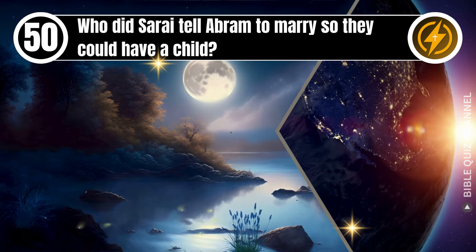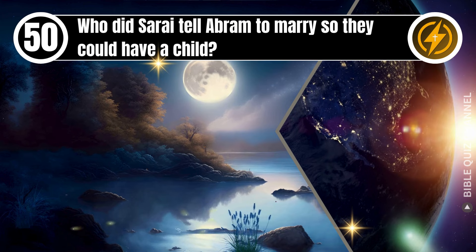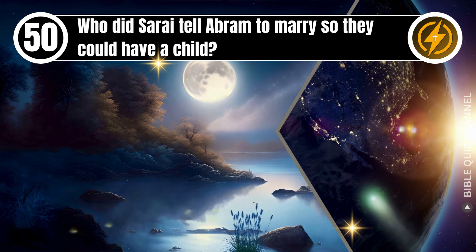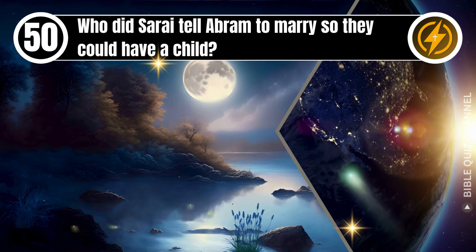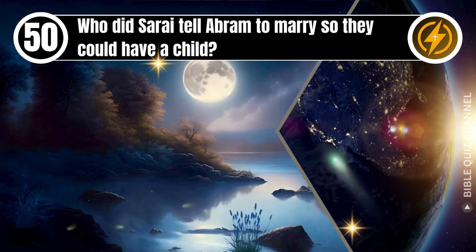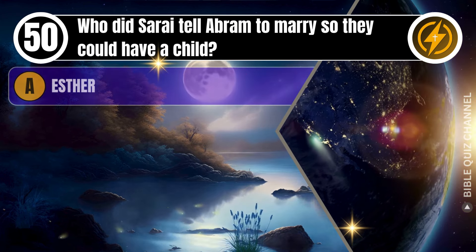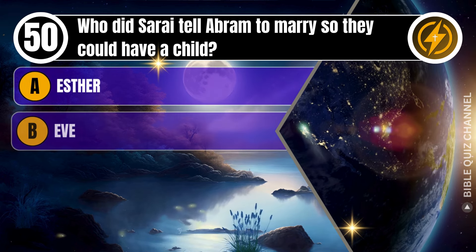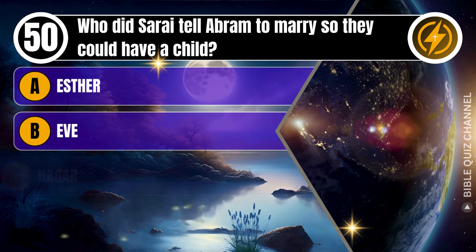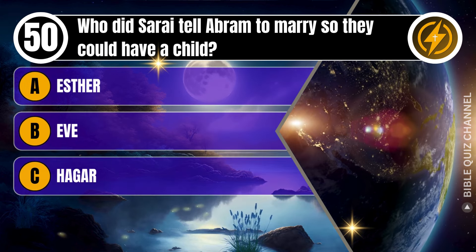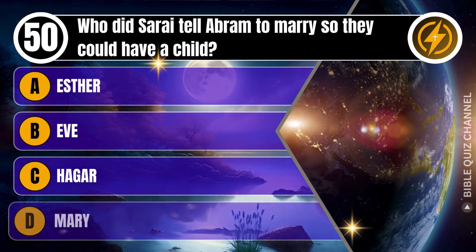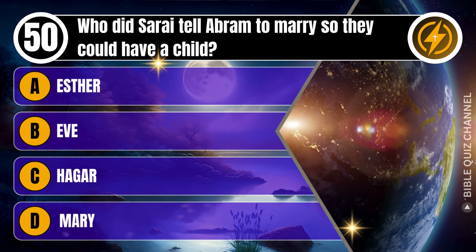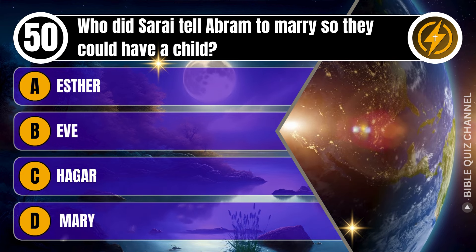Question 50. Who did Sarai tell Abram to marry so they could have a child? A. Esther. B. Eve. C. Hagar. D. Mary. You get 10 seconds.